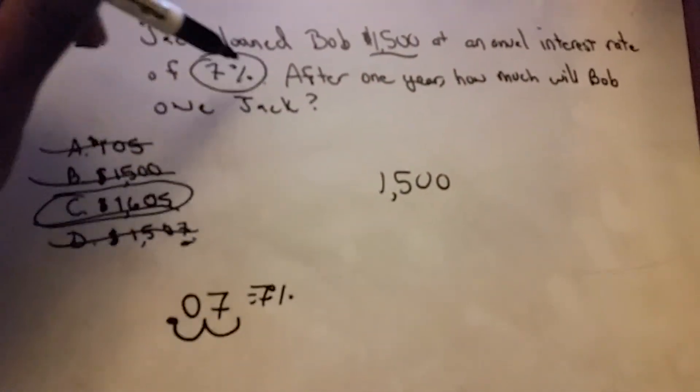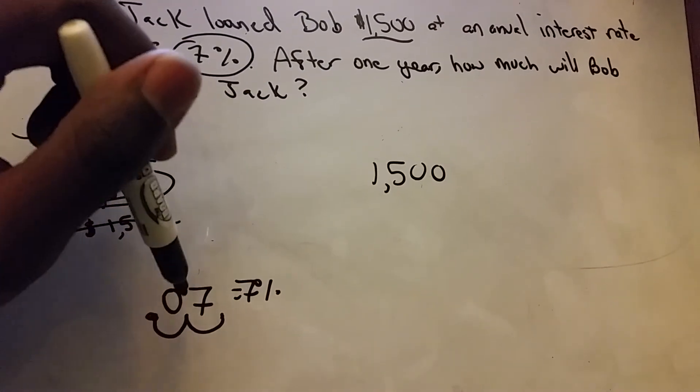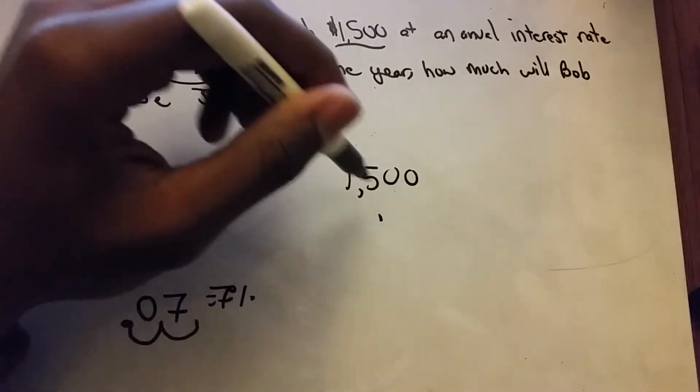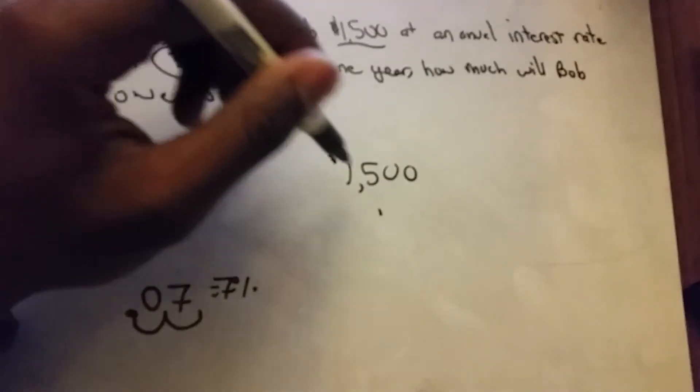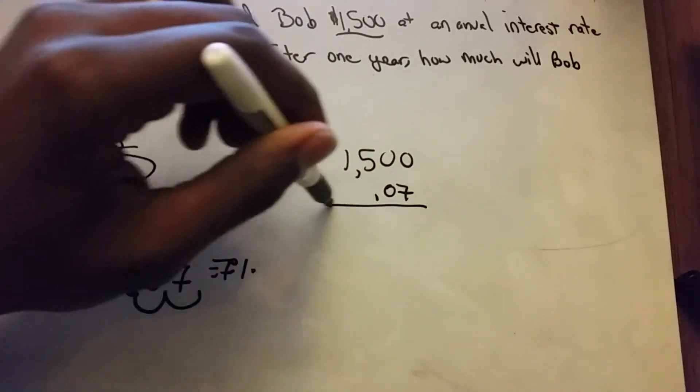So to find the interest of something, you take whatever the amount is and you multiply it by that decimal. For our case, we have $1,500 and we're going to multiply that by 0.07 because that's 7%.